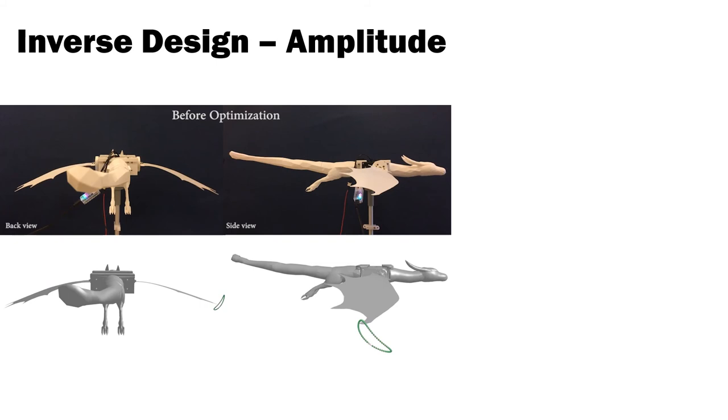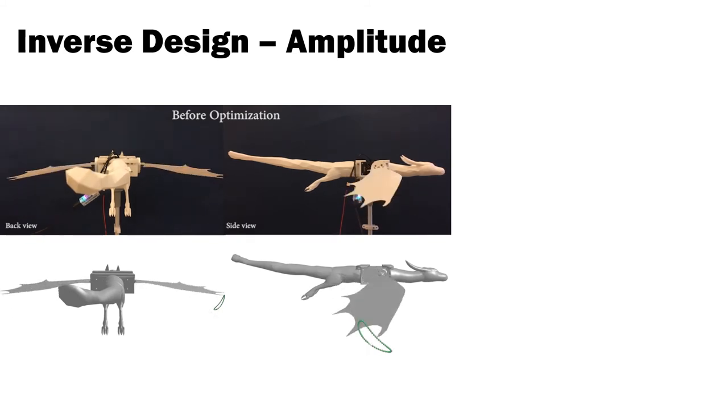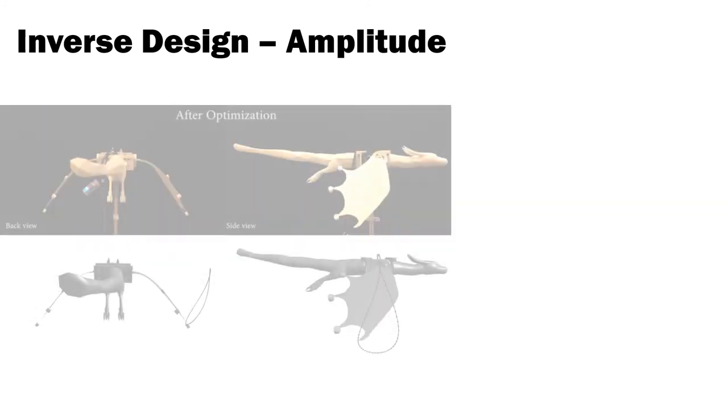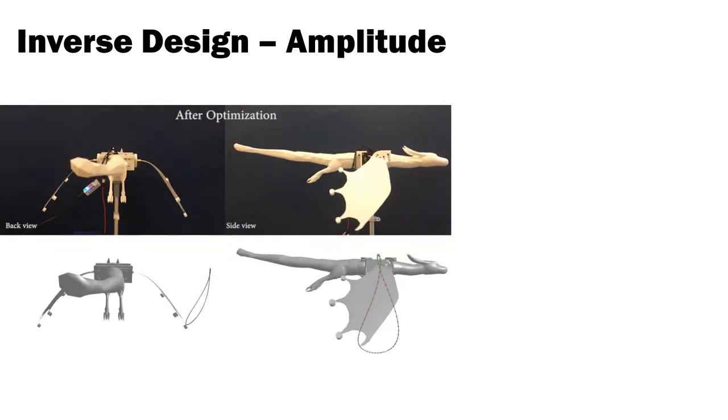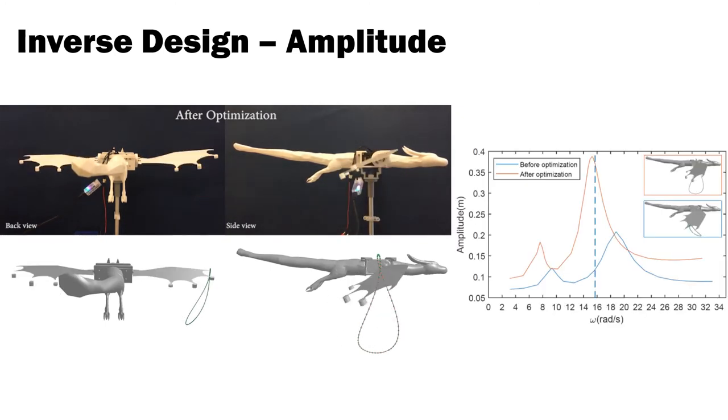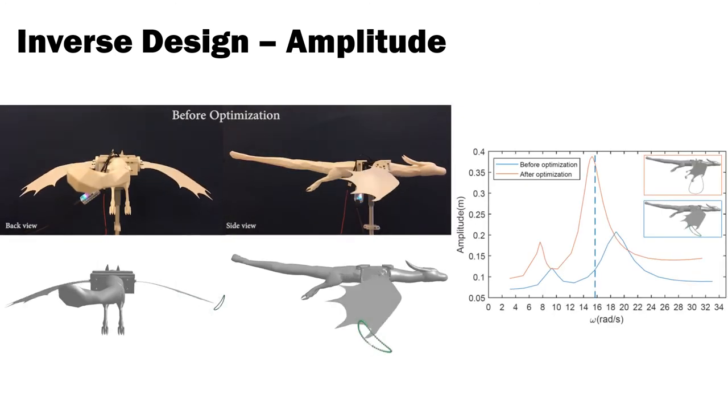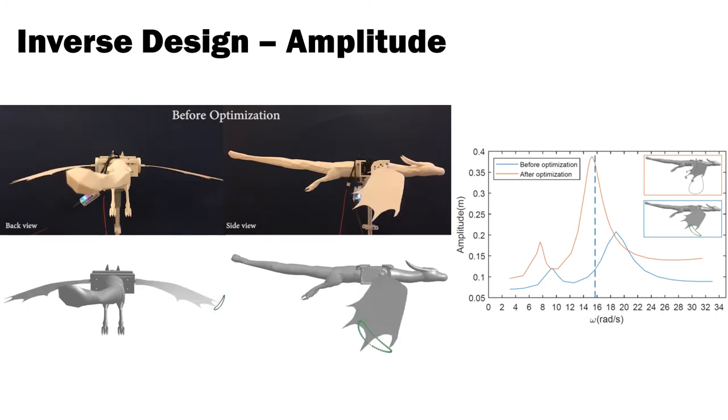This example here illustrates inverse design with our amplitude objective on a set of compliant dragon wings, modeled using discrete shells. We again optimize for additional weights attached to the trailing edge of the wing that lead to motion amplification at a given input frequency of 2.5 Hz. It can be seen from the video that the motion is significantly amplified after optimization. The frequency response plots shown on the right additionally reveal that the peak resonance frequency is shifted such that it almost coincides with the driving frequency.